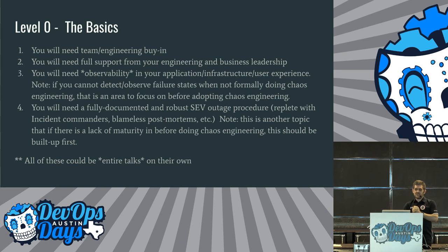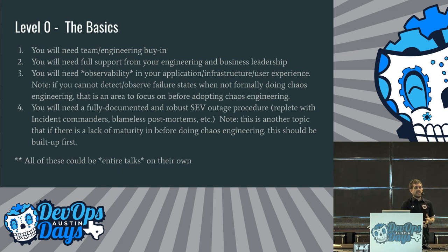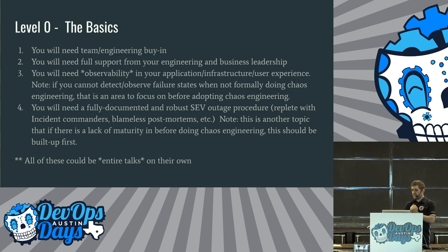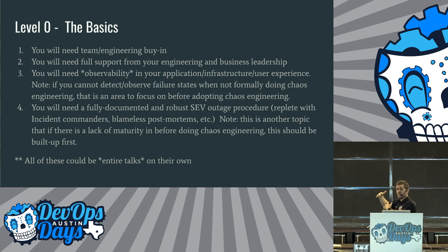You're going to need full support from your engineering and business leadership, because doing this takes time, and there's some risk in starting to talk about breaking things. The company should have the intent to do the right thing — if your company doesn't have a culture of 'let's build this the right way up front,' that's something to address at level zero. You also need observability in your application, infrastructure, and user experience. If you run an experiment saturating with web requests but can't see metrics, that's a big problem.